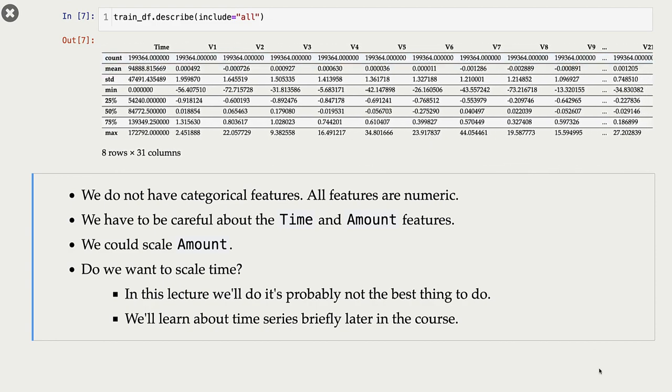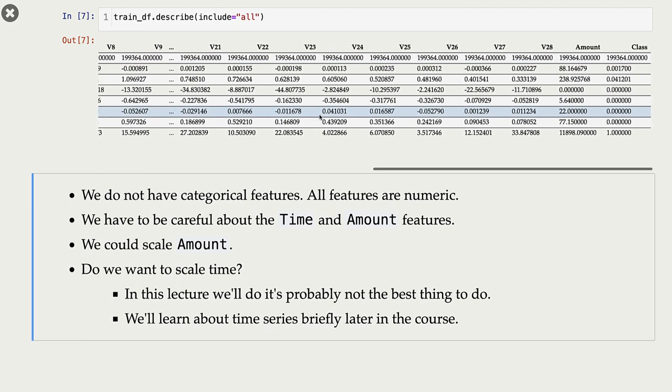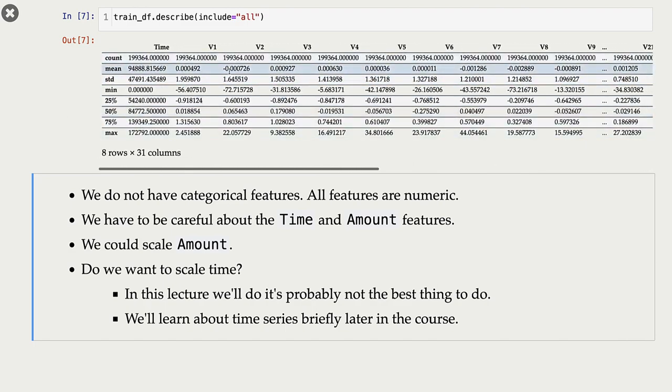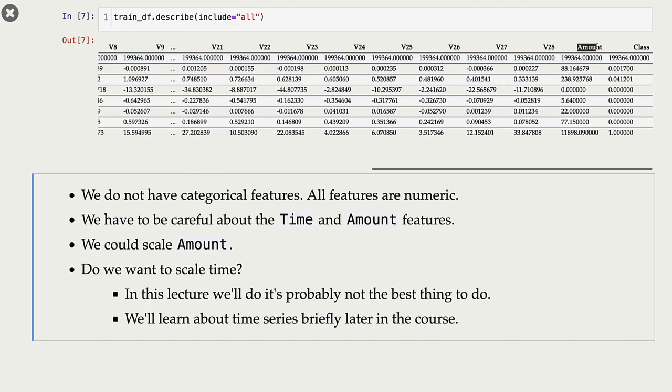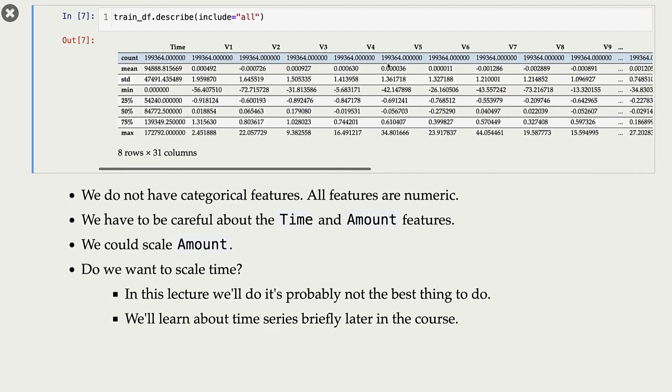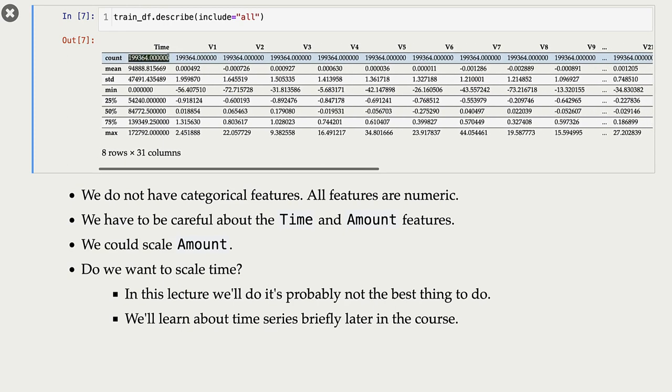Now, other than these V1 to V28 features, we have time feature and we have this amount feature. Now for amount feature, we can apply scaling. But for time feature, it doesn't make much sense.